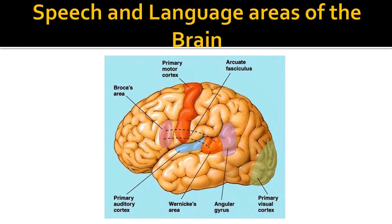This picture shows the different speech and language areas of the brain: the Broca's area in the frontal lobe, the Wernicke's area in the temporal lobe, the arcuate fasciculus connecting the Broca's and Wernicke's areas, and the angular gyrus in the parietal lobe.